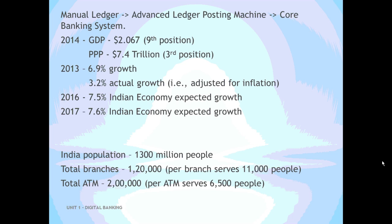Now let us look at the key statistics. In 2014, our country stood at 9th position in GDP with $2.067 trillion and third position in purchasing power parity at $7.4 trillion. In 2013, India had a growth of 6.9%, in which the actual growth — after adjusting for inflation — was at 3.2%. It has been estimated that the Indian economy would grow at a rate of 7.5% and 7.6% in 2016 and 2017.